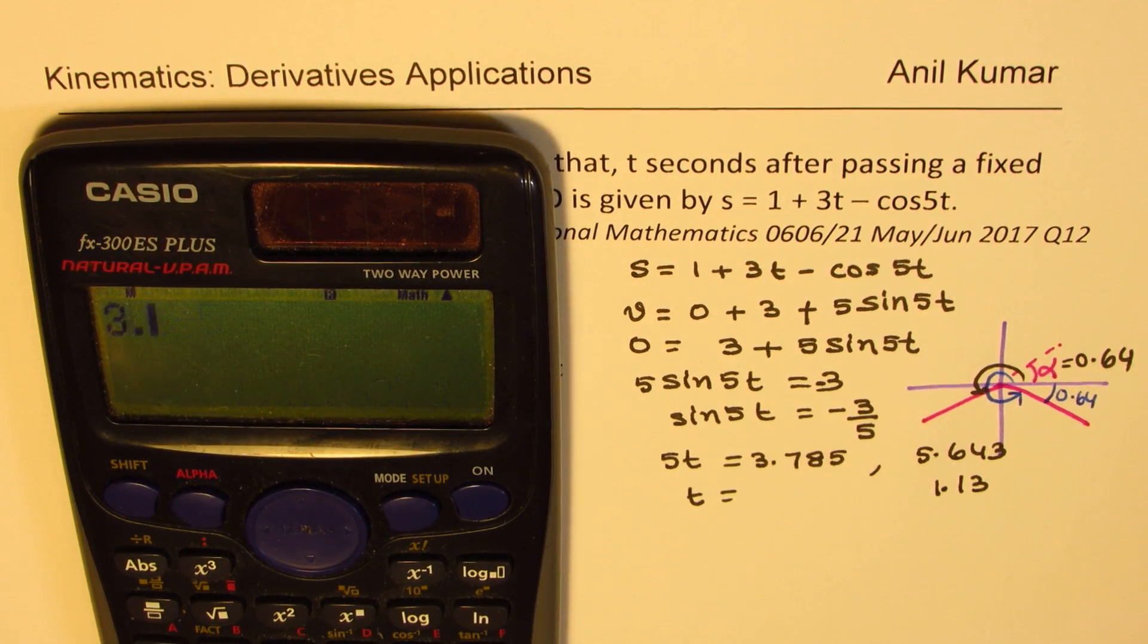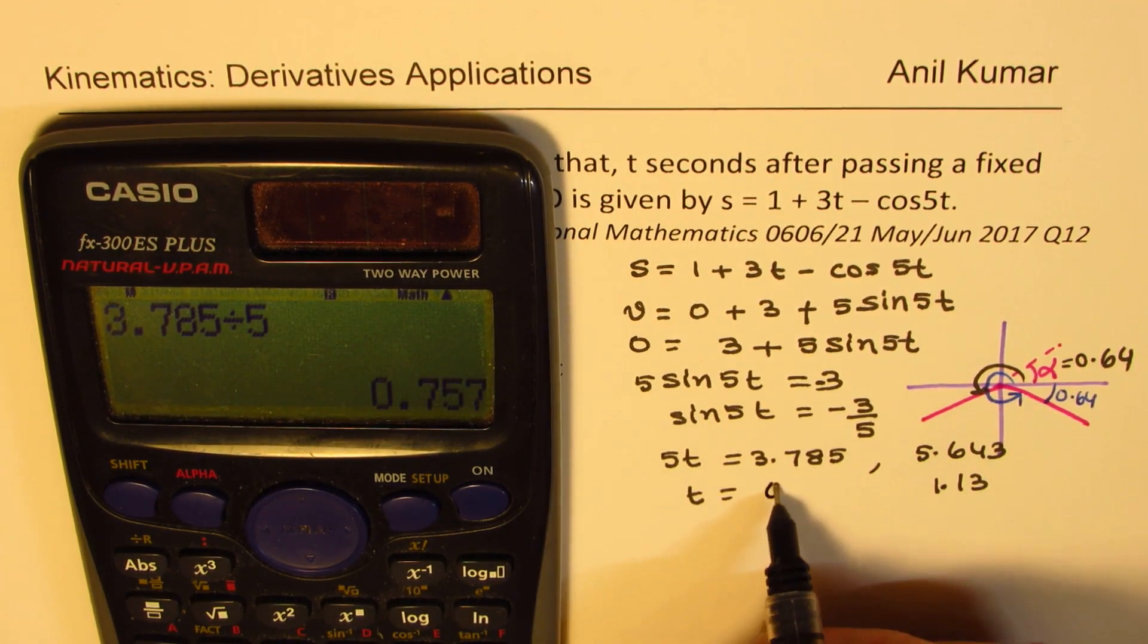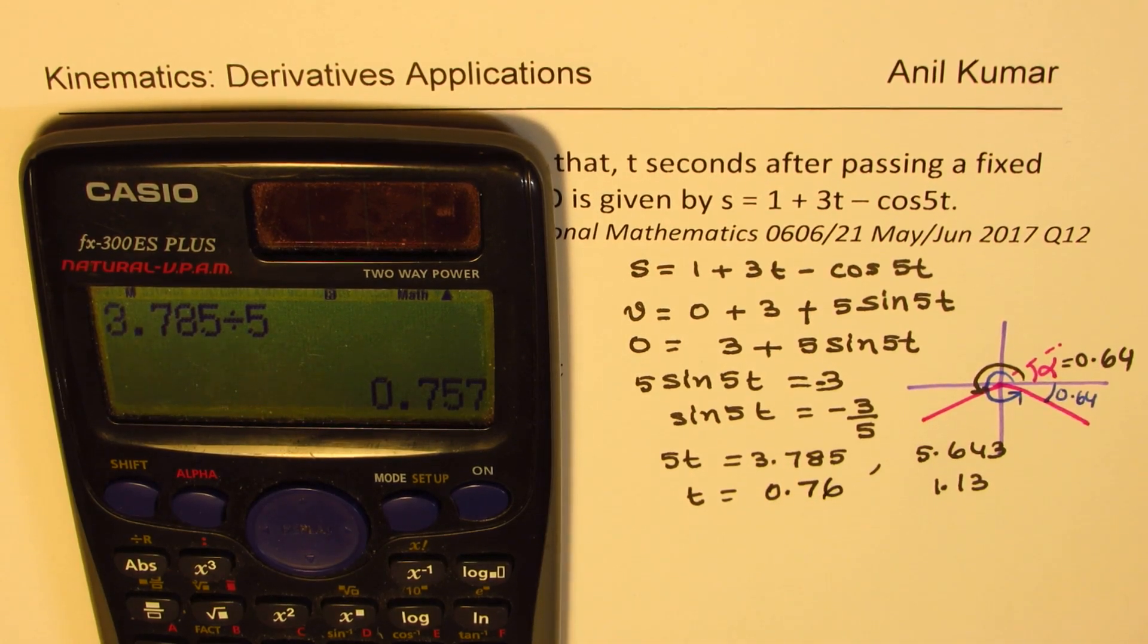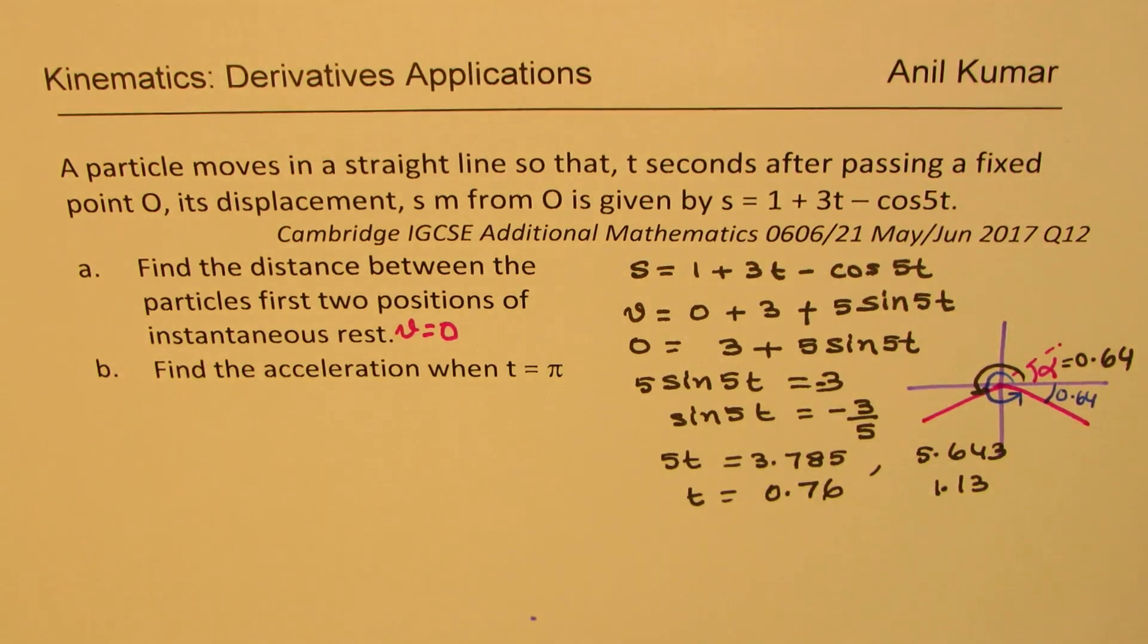And here 3.785 divided by 5 gives us in decimals 0.757, so we'll write 0.76. So these are the 2 times at which we find that velocity is 0.